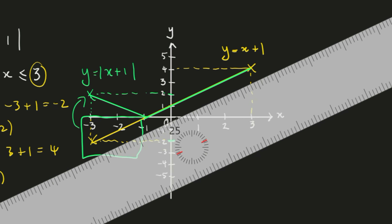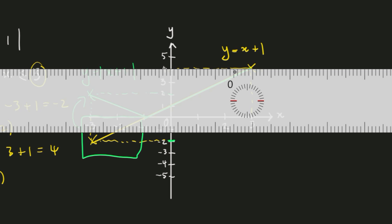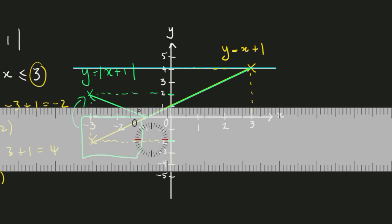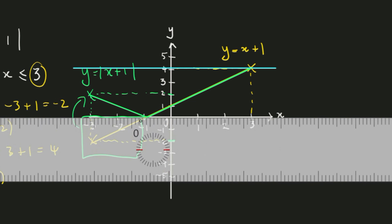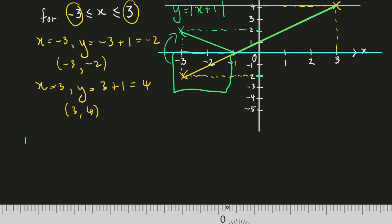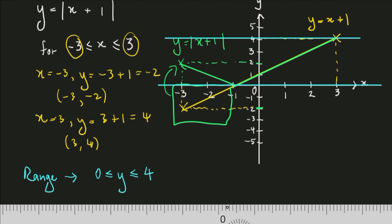What is the range here? We take the highest Y value within the domain and the lowest. The highest value is 4, and the lowest value is 0. So our range is: Y is greater than or equal to 0 and less than or equal to 4. This is how we find the range of the modulus function. That's it for this video — thank you for watching. If you found it useful, please hit the like button, and subscribe for at least one new video per week. See you in the next one.